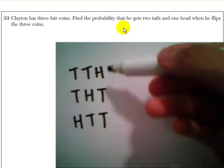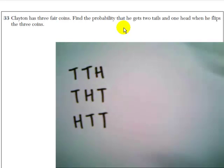In fact, there are three ways that you can get two tails and one head when you flip three coins.